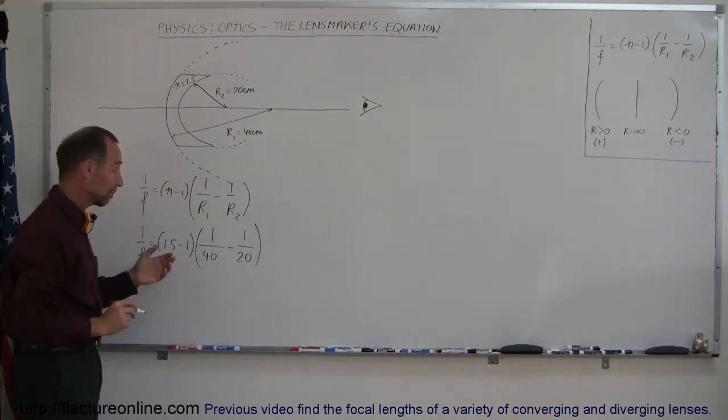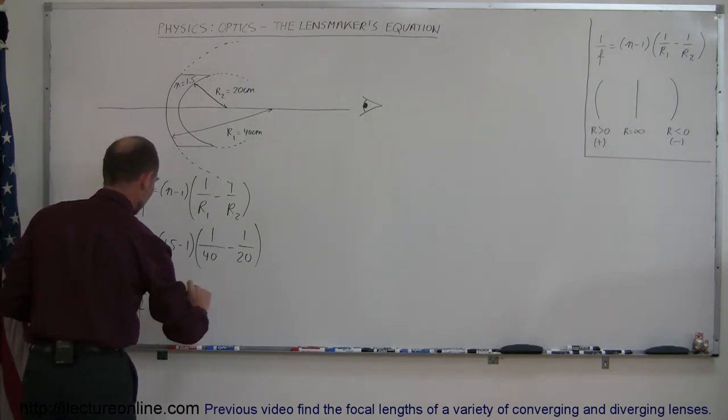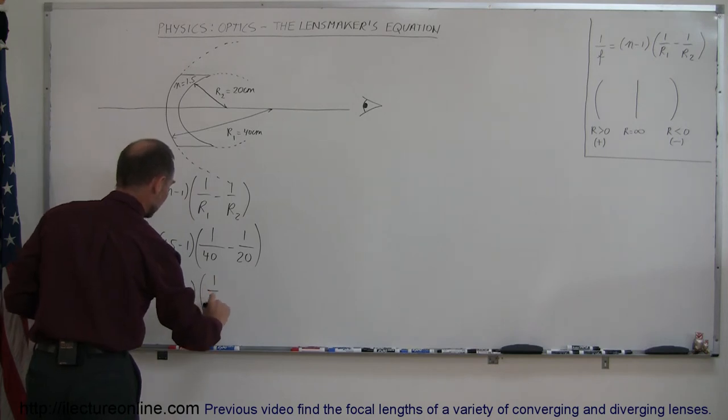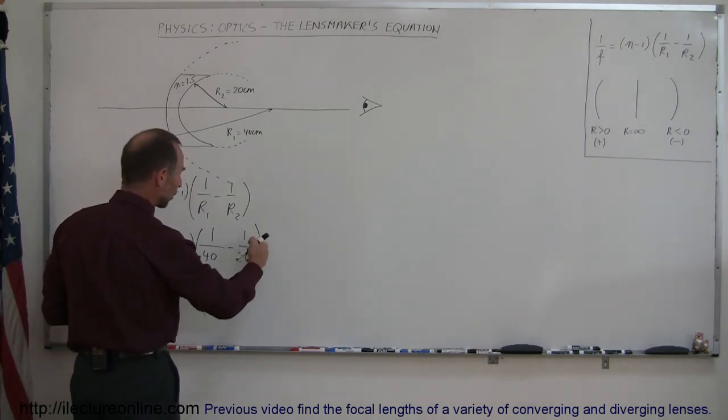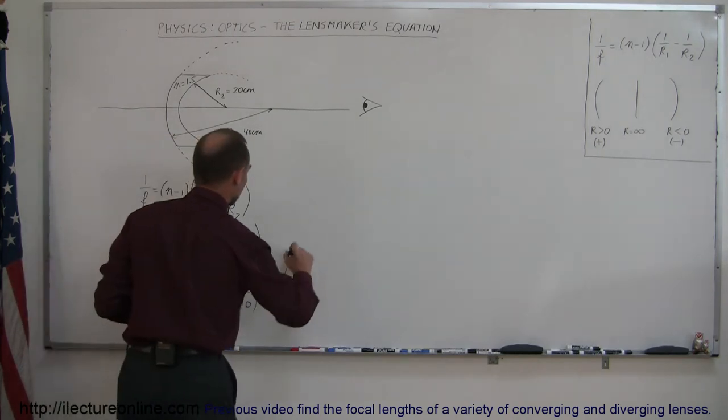There we go. Now we have to combine those. We need a common denominator. 1 over f is equal to 1.5 minus 1 times 1 over 40. That would be minus 2 over 40. If I multiply both the top and the bottom by 2, we get 2 over 40, like so. Let's move over here. We have a little more room.